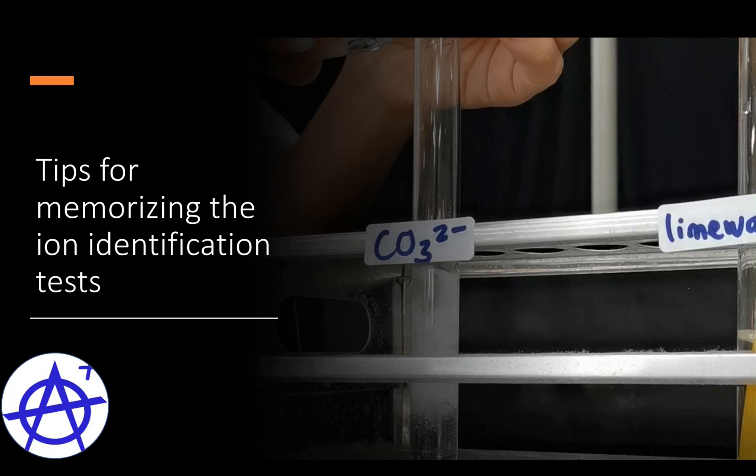Today I'm going to share tips on how to memorize the ion identification tests. I'm also going to make connections with other related topics such as acids and bases, the solubility rules, and the periodic table. The material is suitable for IGCSE O level chemistry, A level, and IB students.